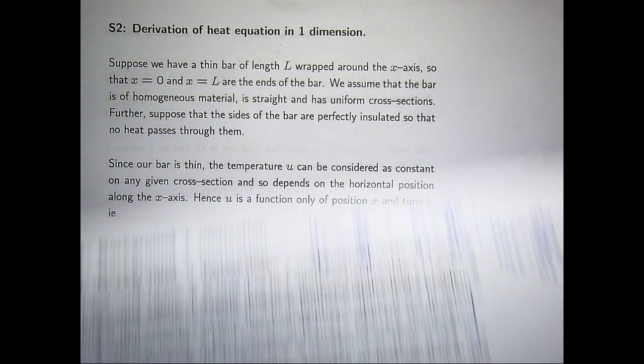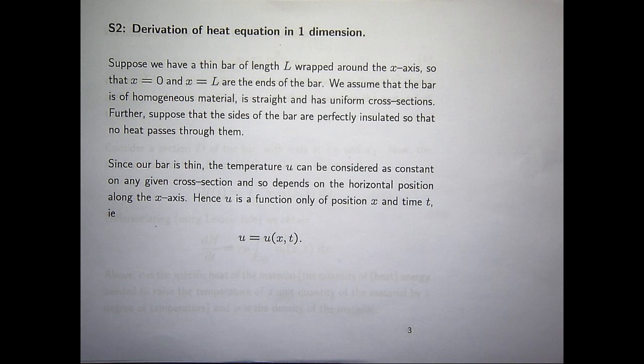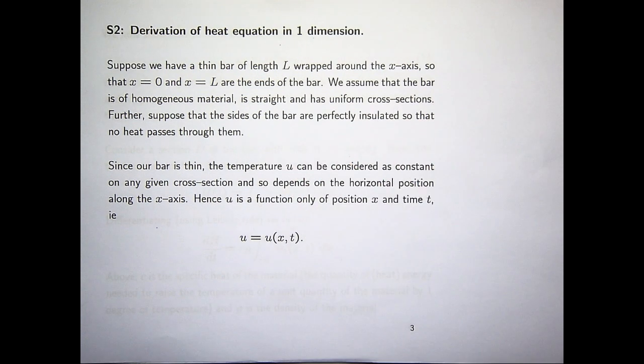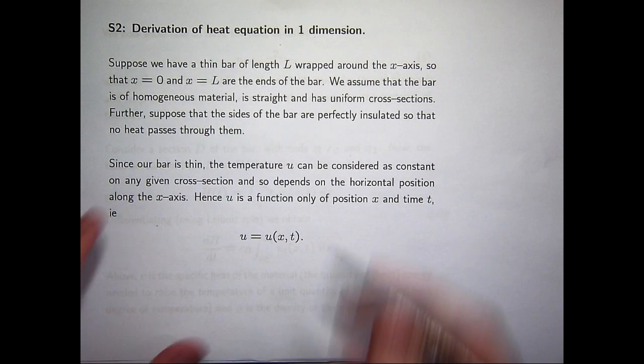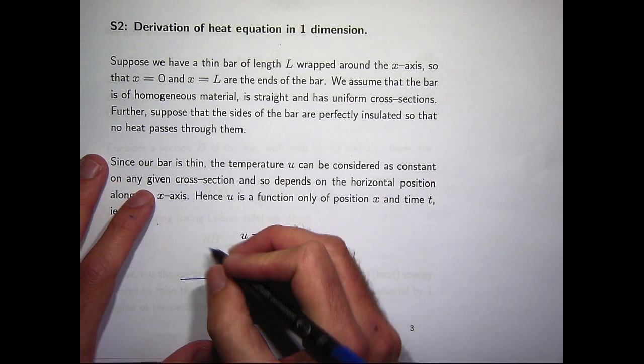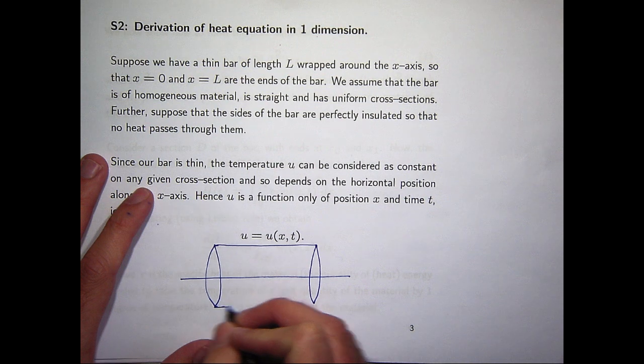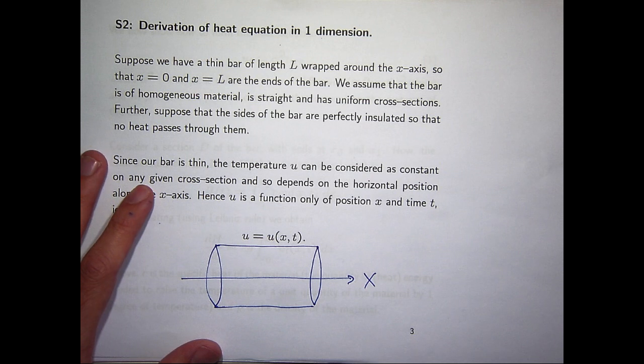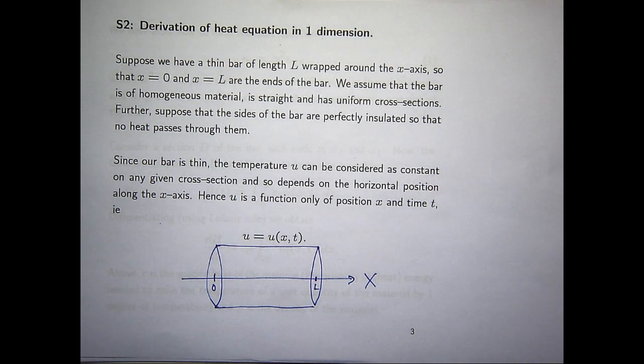So we are going to derive the heat equation in one dimension, just a real simple analysis. Suppose that we have a thin bar, or a thin rod, of length big L, wrapped around the x-axis. In particular, the ends of the rod, or the bar, will lie at these positions. So if I wanted to draw a little picture here, I would draw something like this. Suppose this is the x-axis, the horizontal axis here. The ends are at x equals zero and x equals big L.